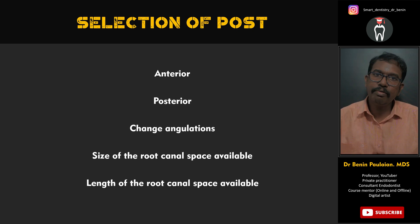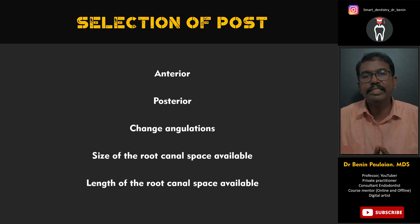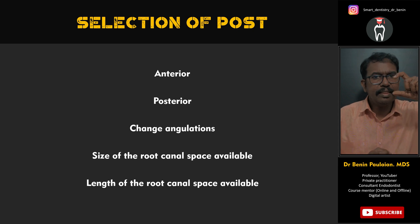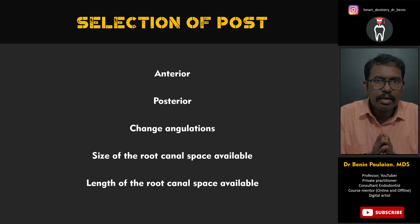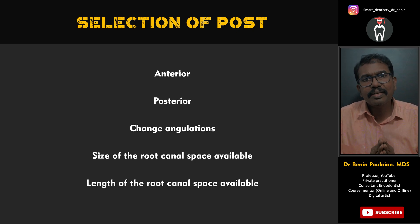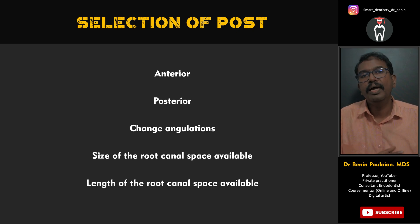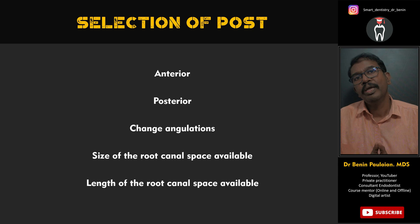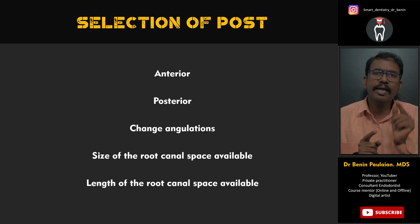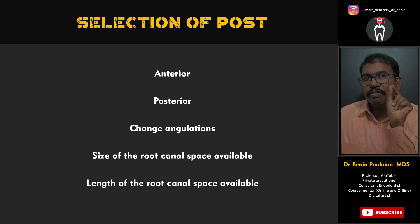Here is a simple decision framework: For an anterior tooth where you want to change the angulation, go for a ribbon type post. If no angulation change is needed, go for a fiber post. For a posterior tooth, go for a prefabricated metal post, as they are available in very short lengths and small thickness while being quite strong. Regarding root canal space: if only a very narrow space is available, go for a small prefabricated metal post rather than widening it for a larger fiber post — fiber posts in very small dimensions are not very strong.